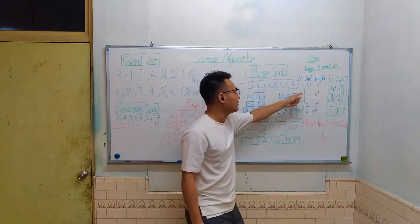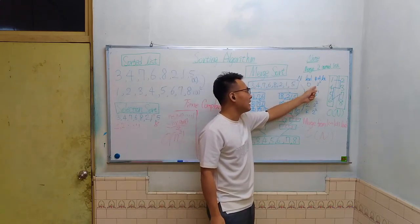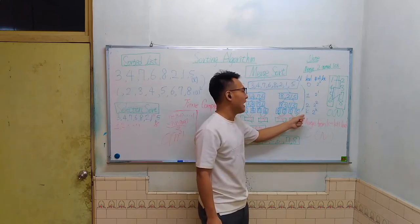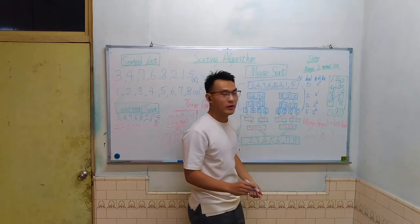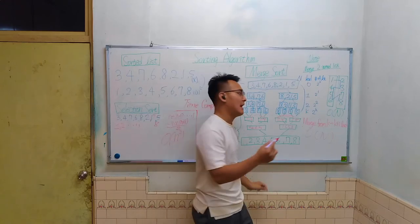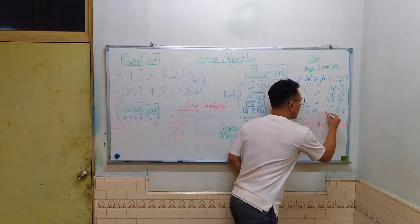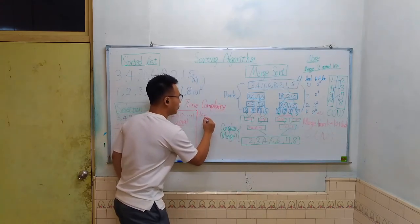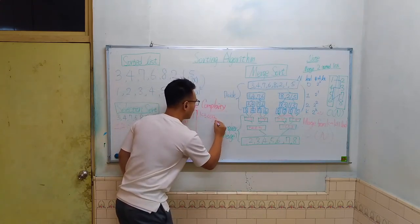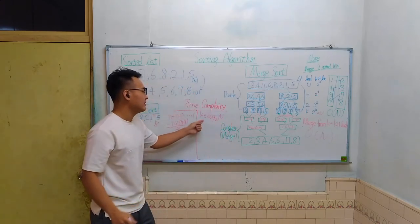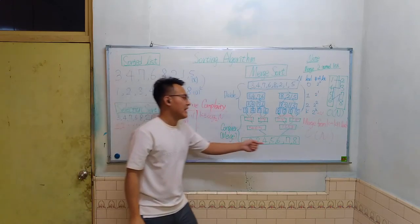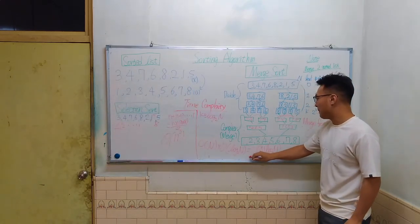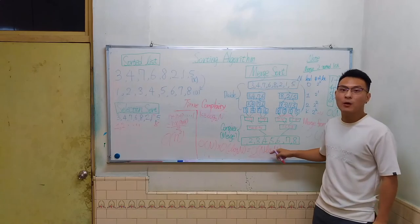And you can see here, when we're at level 0, it will be 1 sublist. And at level k, we will have 2 to the power k sublists, which will equal to the number of our elements. So we can get k is equal to log N. We have log N layers, and each layer takes N to finish the merge process. So the total complexity will be O(N log N).